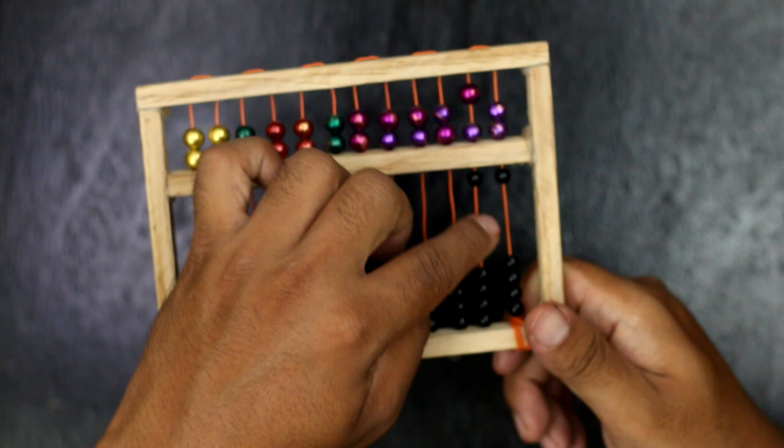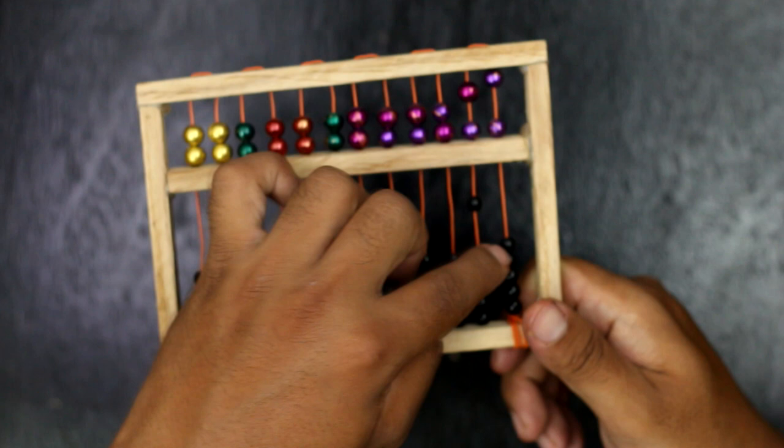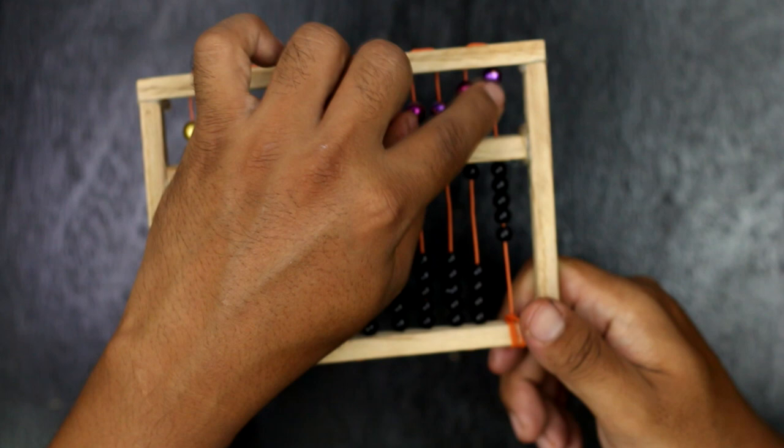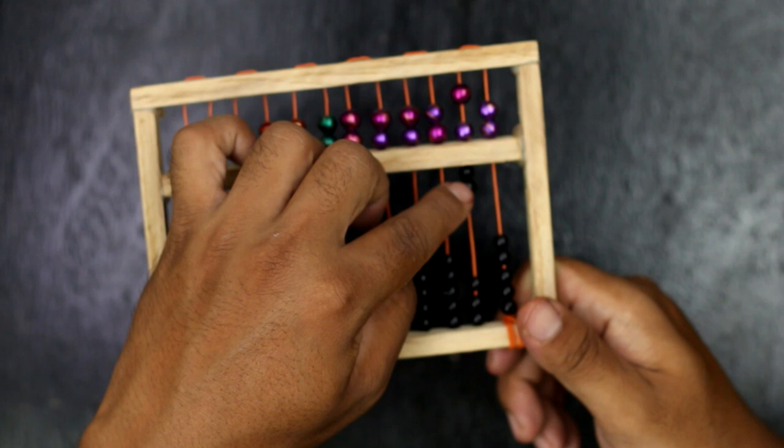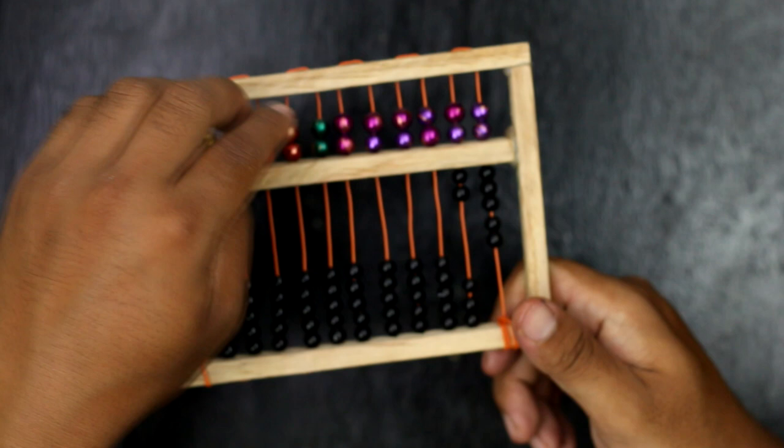One, two, three, four, five. One, two, three, four, five. Now, this indicates number 25 in the abacus.